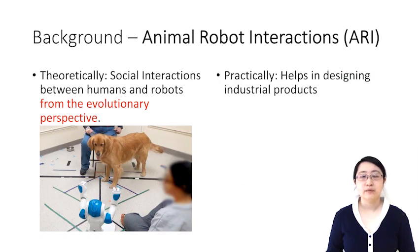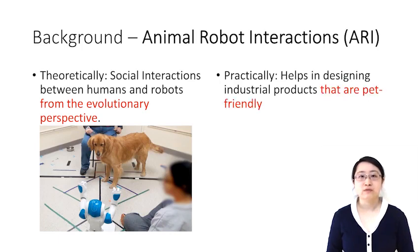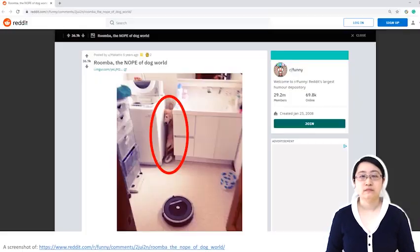Similarly, studying animal-robot interactions can help answer theoretical questions in HRI. Practically, it can also help design industrial products to be pet-friendly, so that the robots at home don't scare the dogs.